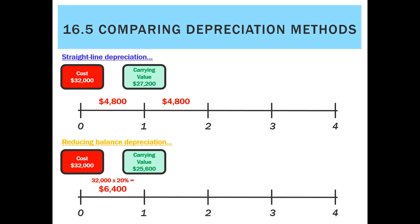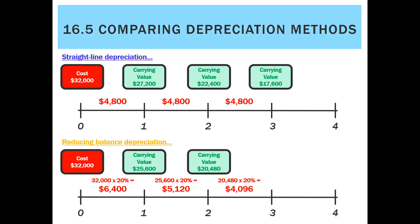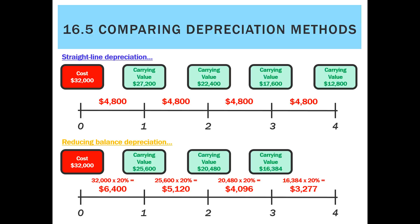In year two, straight line still charges $4,800, but reducing balance charges $5,120 — taking the new carrying value of $25,600 times 20%. Straight line carrying value is now $22,400; reducing balance is $20,480. In year three, straight line remains the same. By year four, reducing balance depreciation has fallen to $3,277, leaving carrying values of $17,600 for straight line and $16,384 for reducing balance.